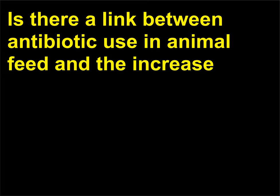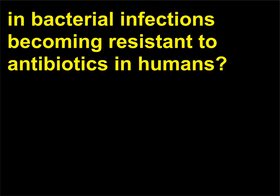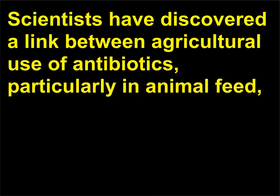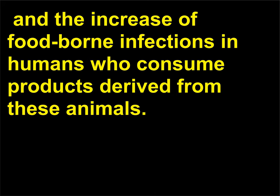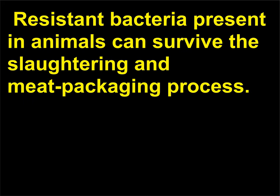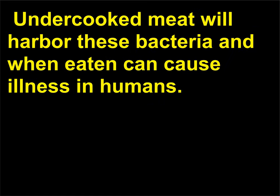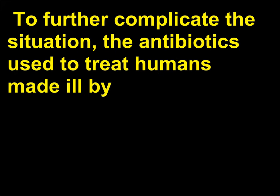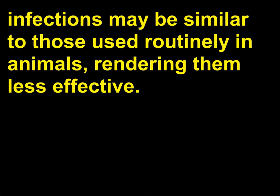Is there a link between antibiotic use in animal feed and the increase in bacterial infections becoming resistant to antibiotics in humans? Scientists have discovered a link between agricultural use of antibiotics, particularly in animal feed, and the increase of foodborne infections in humans who consume products derived from these animals. Resistant bacteria present in animals can survive the slaughtering and meat packaging process. Undercooked meat will harbor these bacteria and when eaten can cause illness in humans. The antibiotics used to treat humans made ill by these infections may be similar to those used routinely in animals, rendering them less effective.